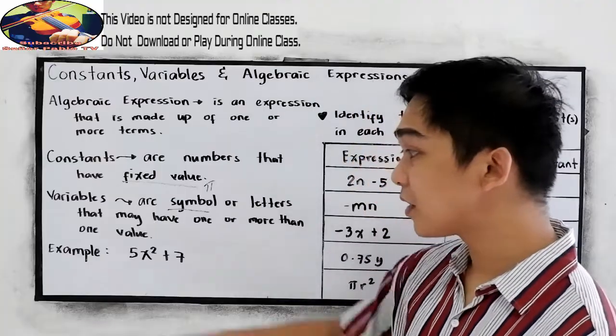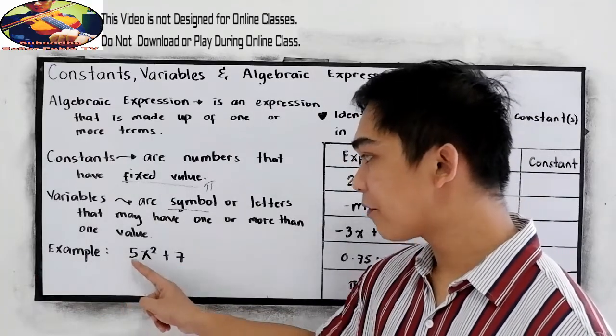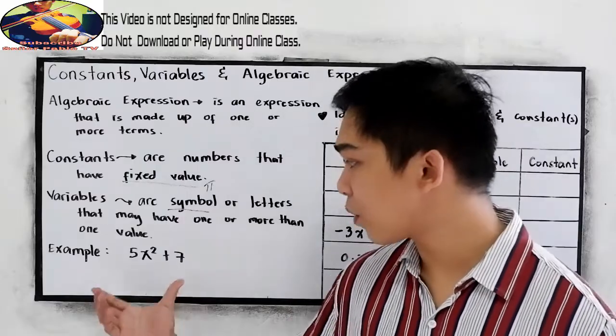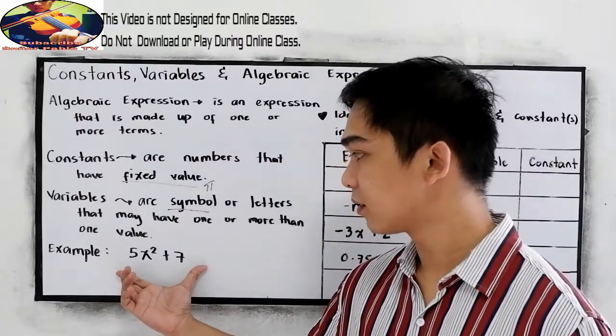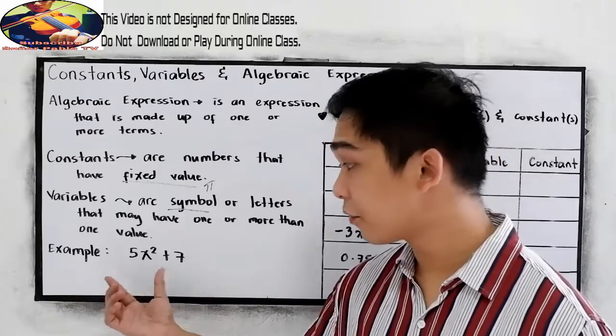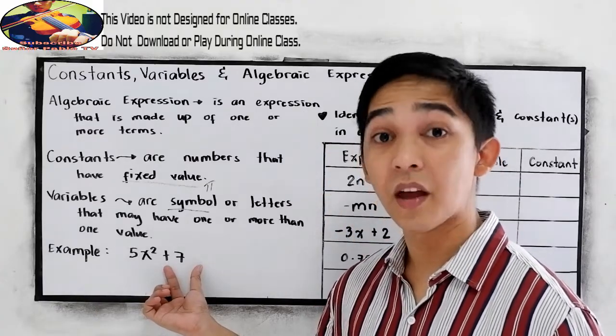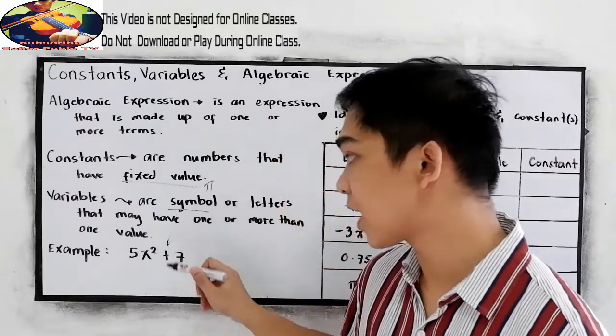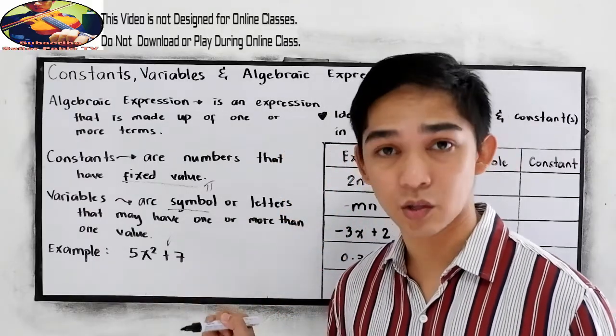So let's have this example: 5x squared plus 7. So this is our algebraic expression. It's composed of two terms. And every term is separated by our operation sign, the plus or minus sign.